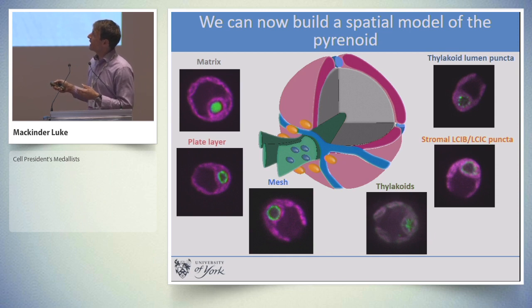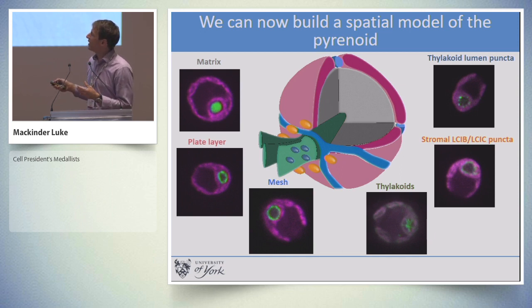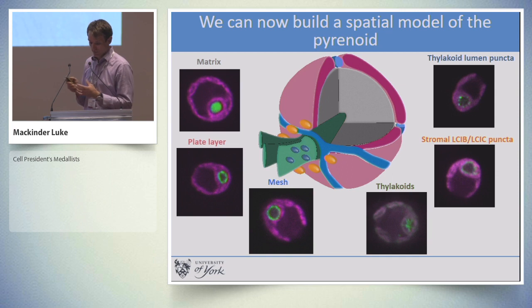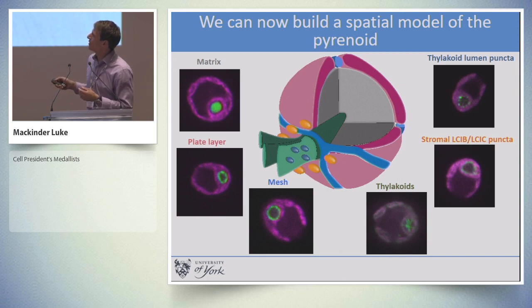We have a core matrix predominantly made up of rubisco. Surrounding this is a plate layer, which we think has proteins associated with starch, and then filling in the gaps between the starch, we have a mesh-type layer. Traversing through the pyrenoid are the thylakoids, with specific proteins labeling these membranes. Surrounding the thylakoid entry sites, we have a punctate structure made up of LCIB and LCIC, and proteins localized within the thylakoids that aggregate at the entry sites.